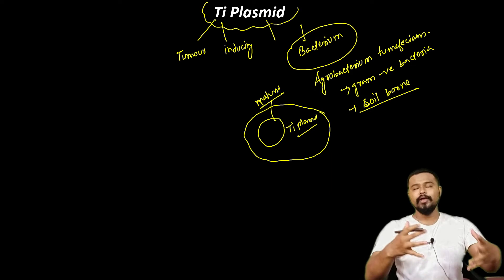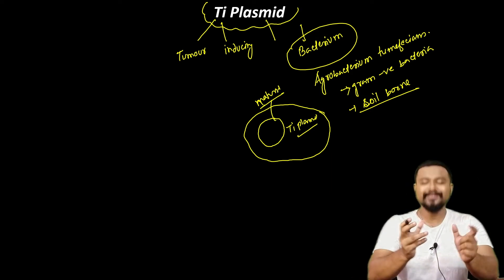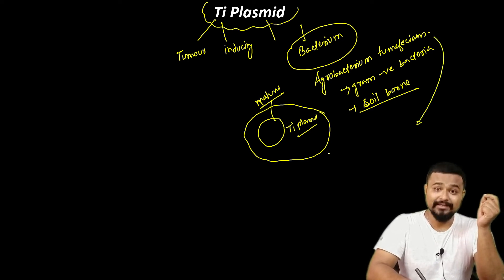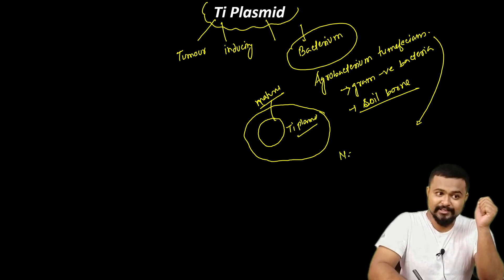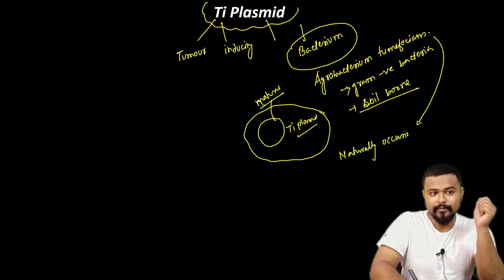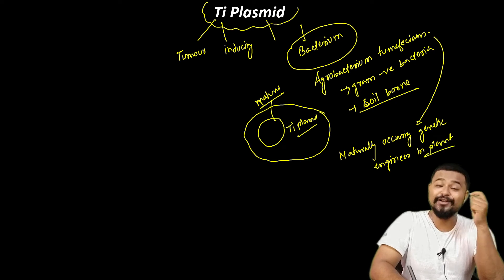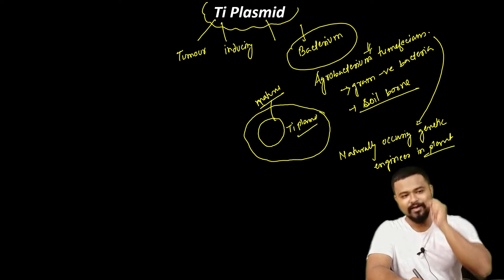Agrobacterium tumefaciens is called the natural genetic engineer of plants. It is a naturally occurring genetic engineer that can transfer DNA into plant cells.